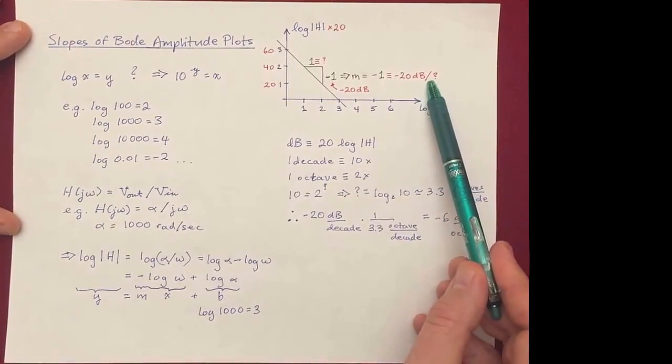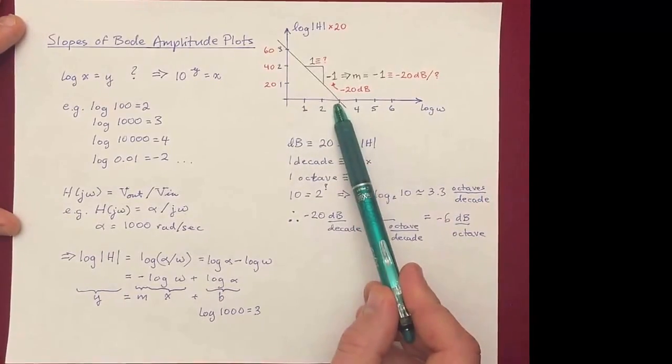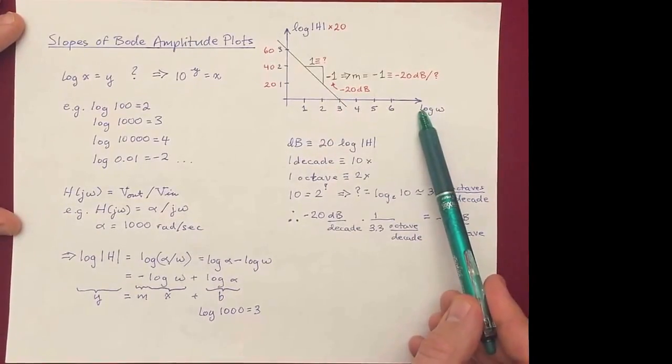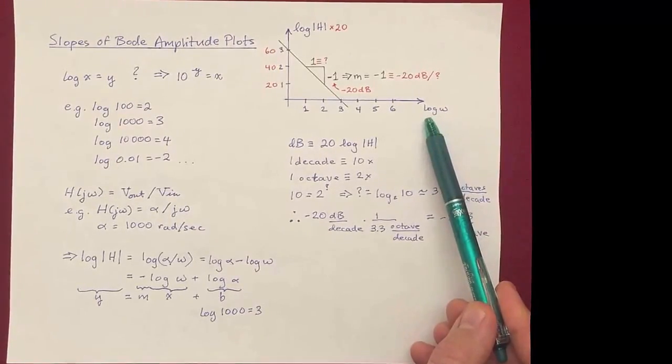The only problem is per what? What is the x-axis here? And it's a little bit confusing because we have the log of a radian per second, which is not really a unit. You can't take the logarithm of something with units.